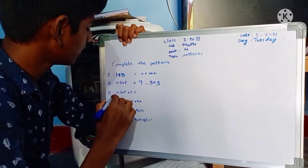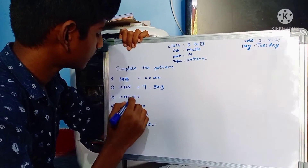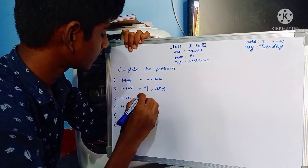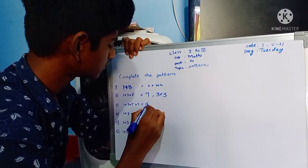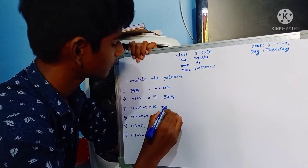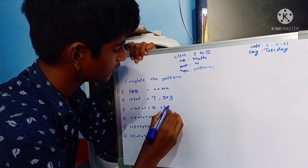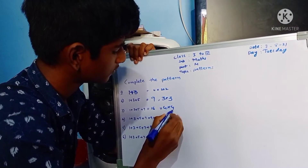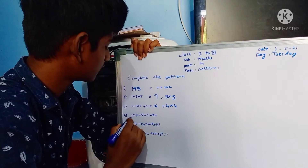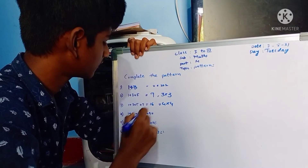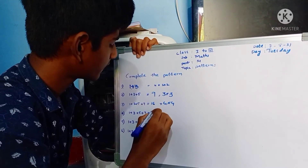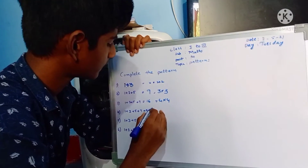1, 2, 3, 4 — 4 to 16, 4 into 4. 1, 2, 3, 4, 5 — 5 to 25.